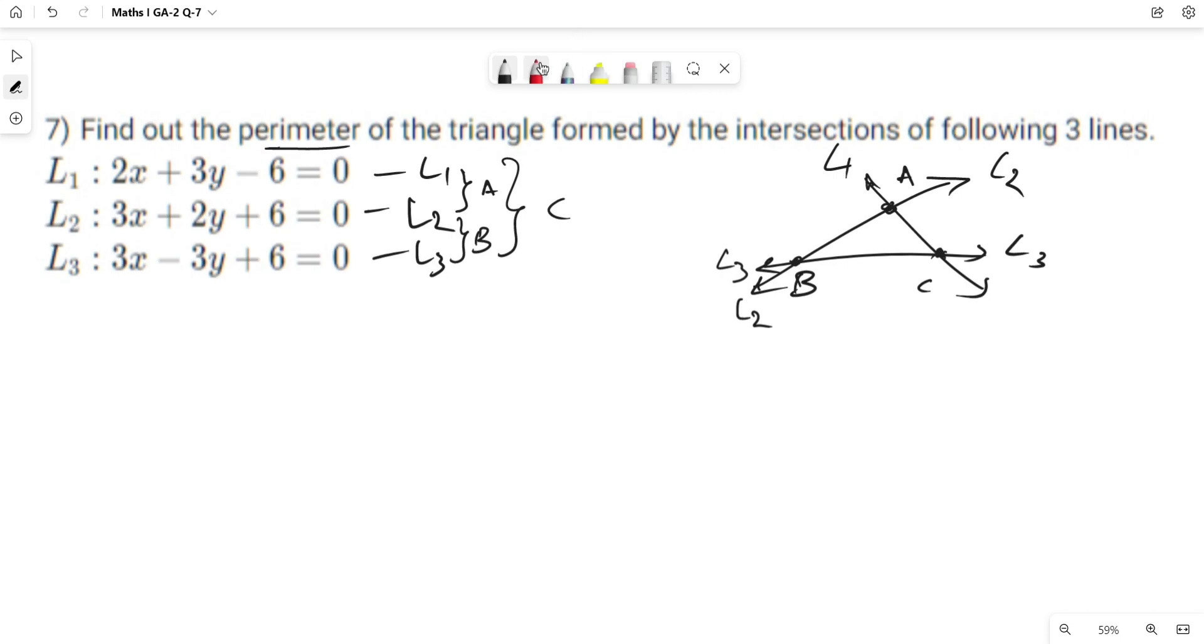Let us find the coordinates of point A by solving L1 and L2. 2x plus 3y equals 6, and 3x plus 2y equals minus 6. Adding both equations we get 5x plus 5y equals 0, so x equals minus y.